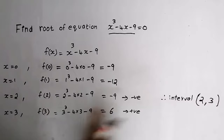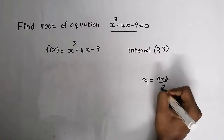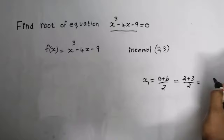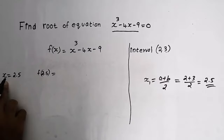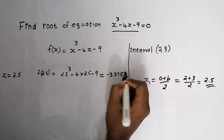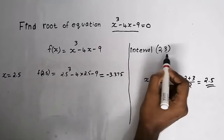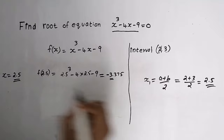That is step 1. Now find x1 — that is our next step. x1 = (a + b) / 2. Our a = 2 and b = 3, so x1 = (2 + 3) / 2 = 5/2 = 2.5. Now f(2.5) = -3.375, which is a negative value. If it is negative, replace interval a. So we replace a with 2.5, giving new interval [2.5, 3].